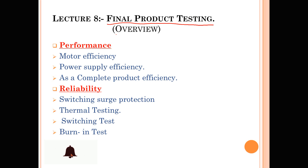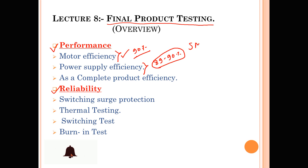Lecture eight provides basic guidelines for product testing. Since ceiling fans are low-cost, common products, very specific or elaborate testing methods are not required. Testing is covered in two areas: performance and reliability. On the performance side, once the motor is designed you verify whether it achieves the desired performance. Power supply efficiency — for the SMPS — is typically 89 to 90 percent.